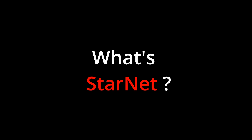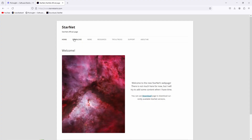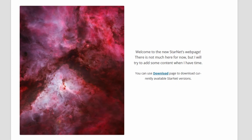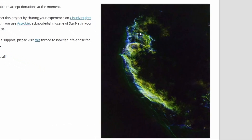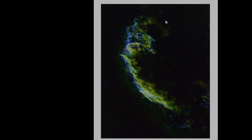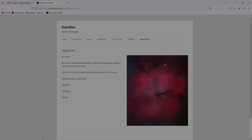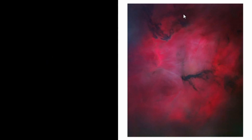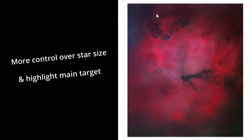Let me briefly explain what Starnet is. Starnet is an advanced image processing tool used for the removal of stars from astrophotography images, leaving only the background. This is particularly useful for tasks such as noise reduction, background extraction, and creating composite images, so you can independently process the main astro target from the stars and combine them afterwards. This also gives you more control over star size and helps to pop your main target.